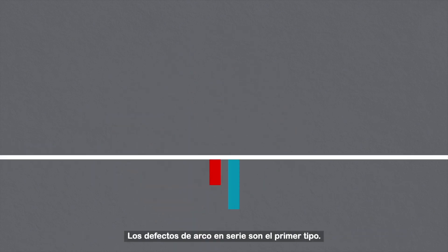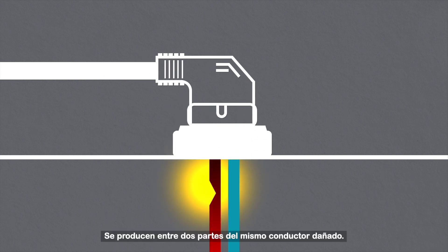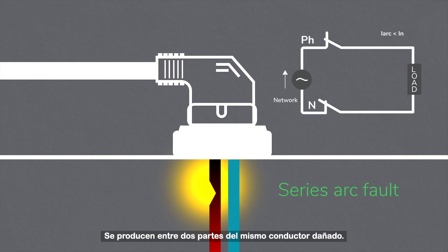Series arc faults are the first type. These occur between two parts of the same damaged conductor.